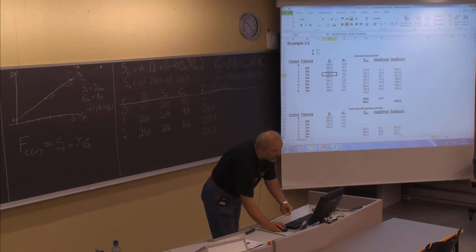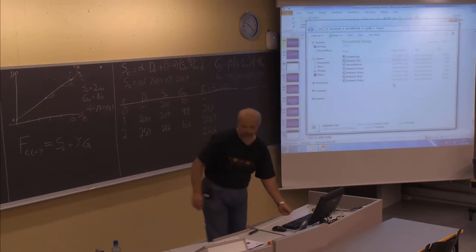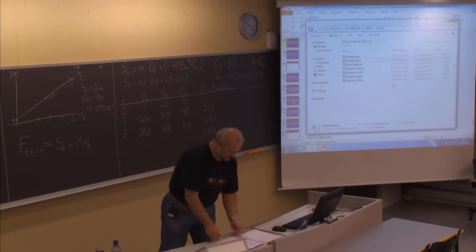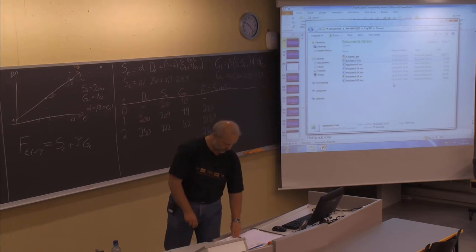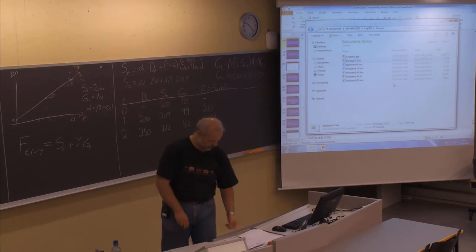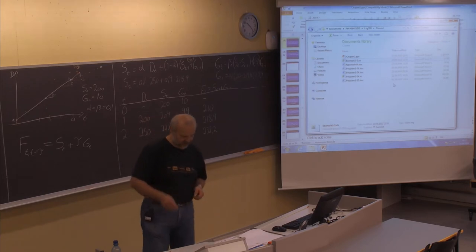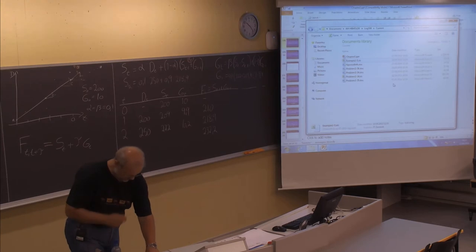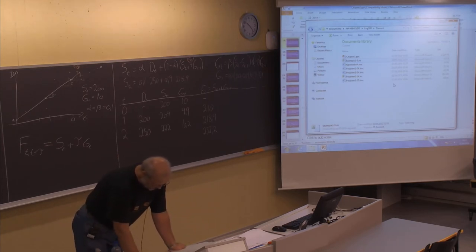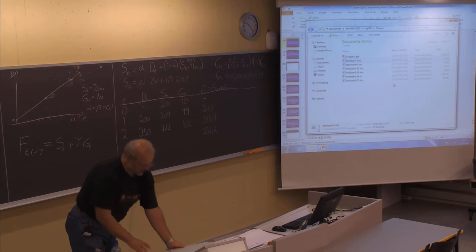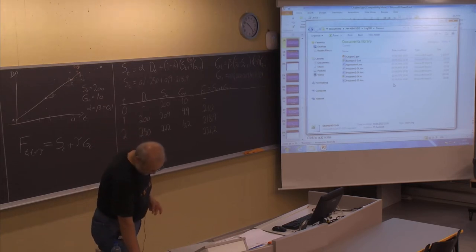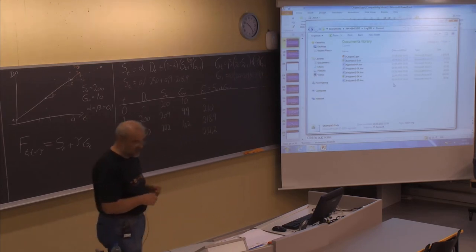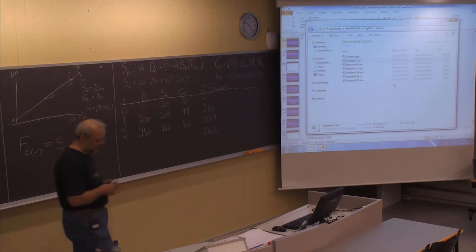Now I will make one more example on the Holt's method. This is problem 2.30 on page 78 from the textbook, which uses the same data as an earlier example — visitors to a park — also used in the regression analysis example.